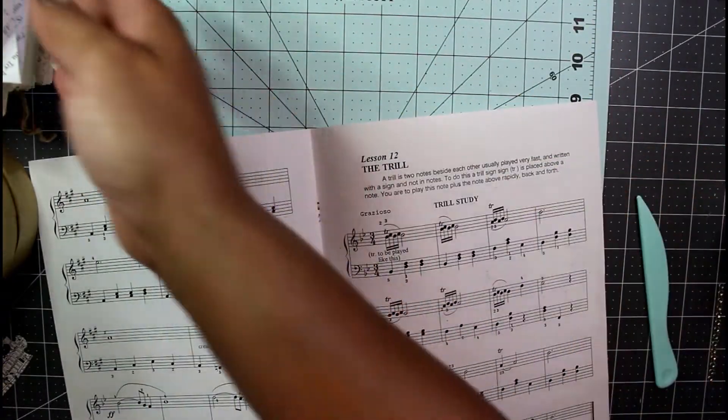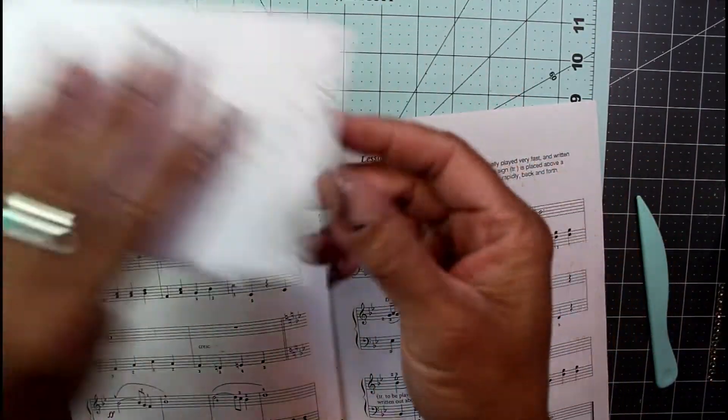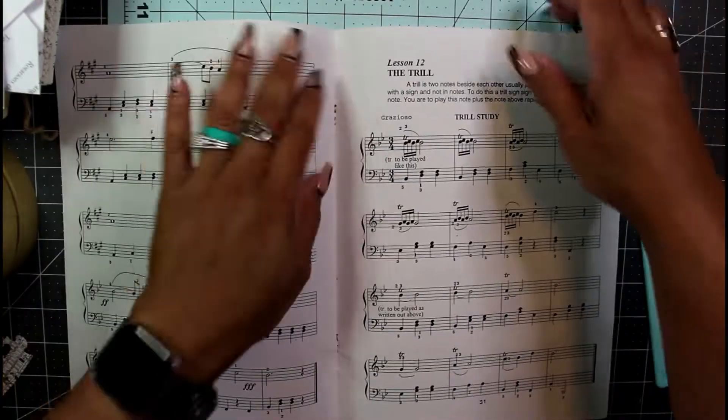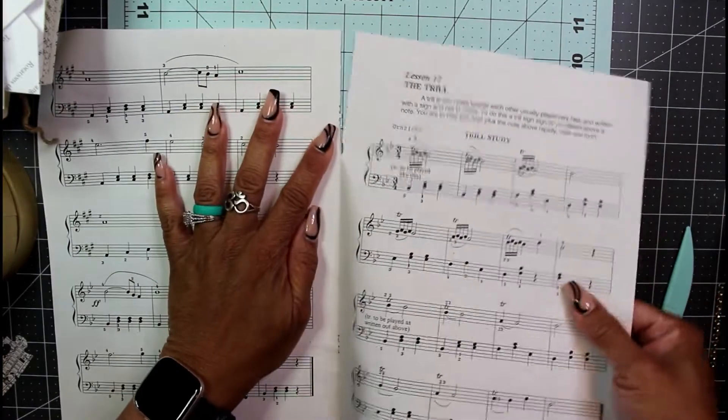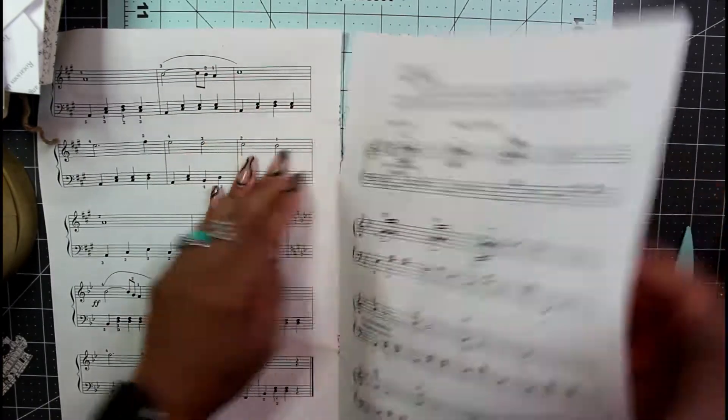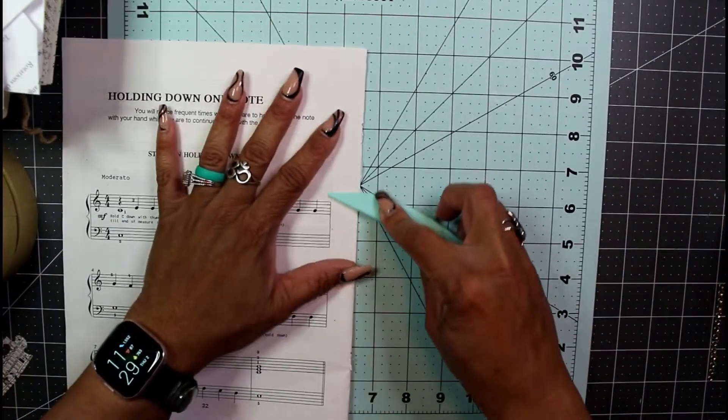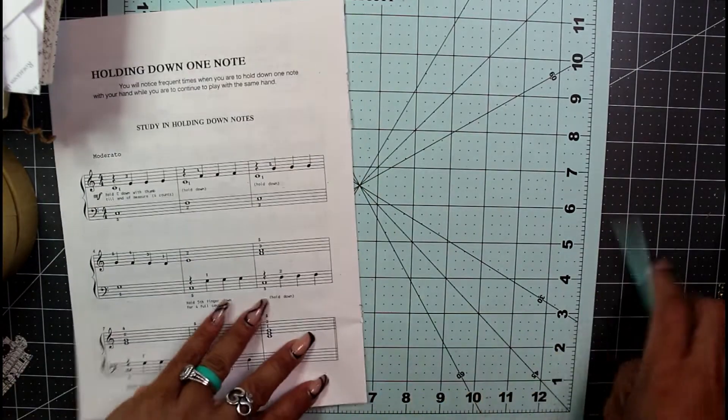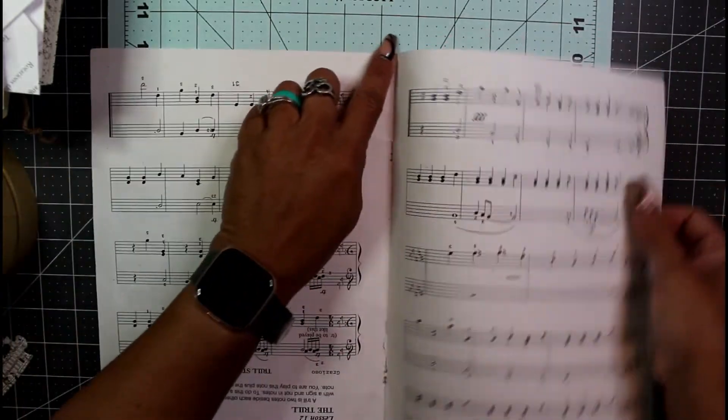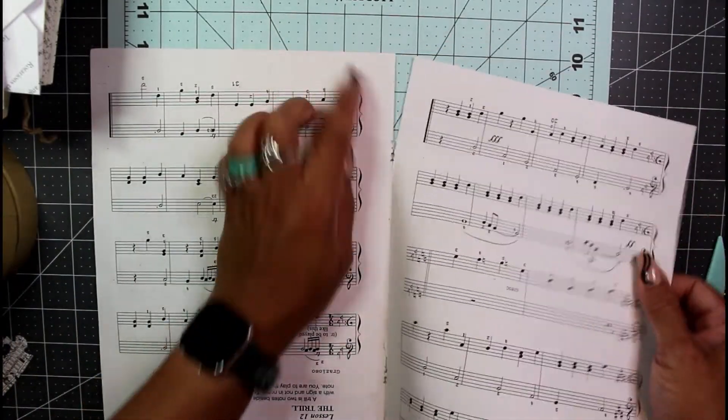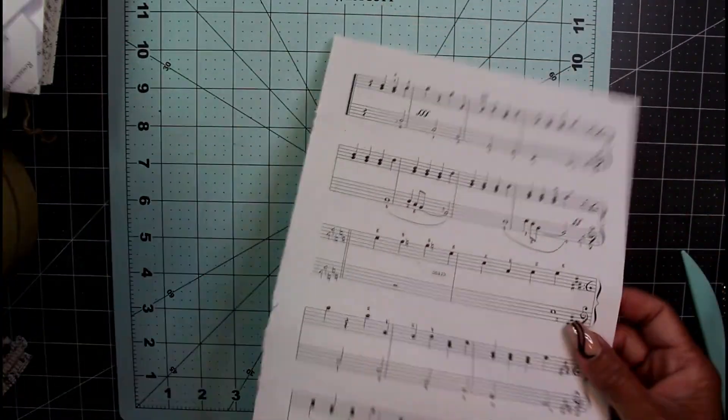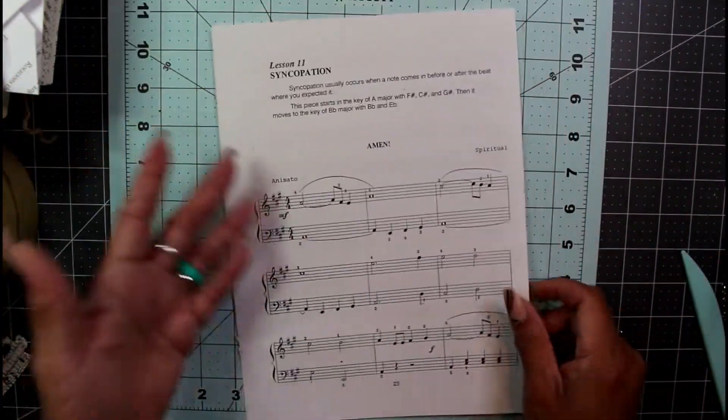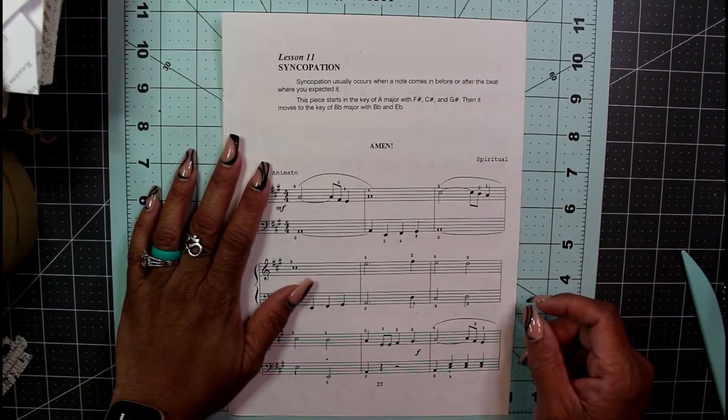To get this to tear evenly, I just bone fold down the center there. To begin with, you have to decide which side you want for the inside, which side you want for the outside.